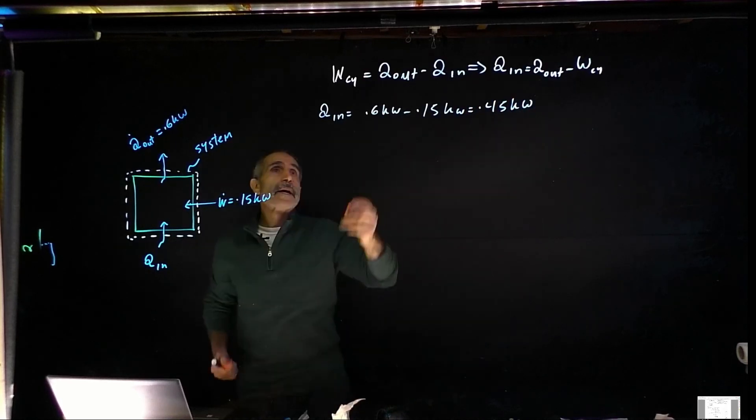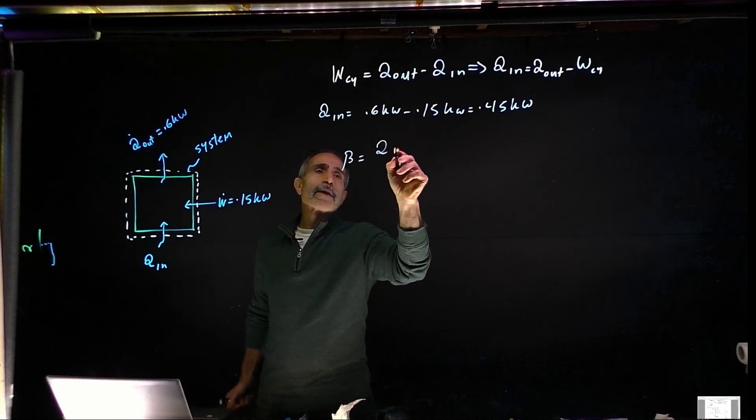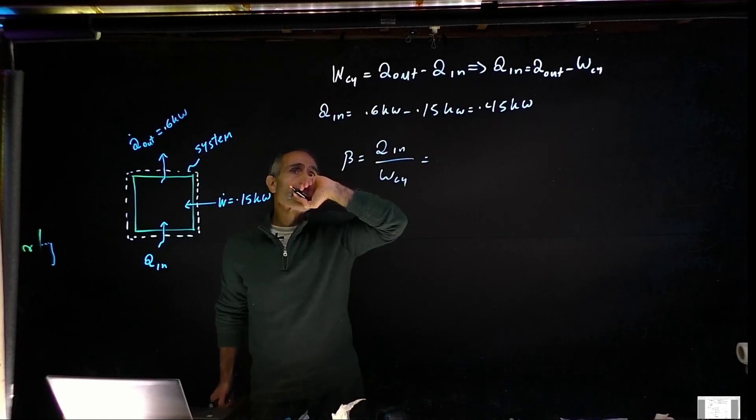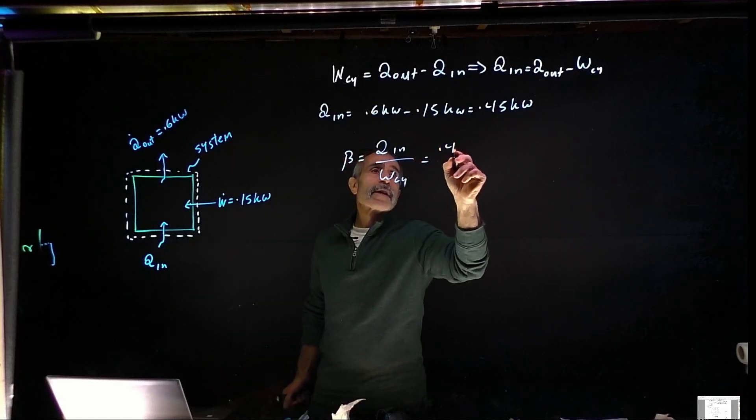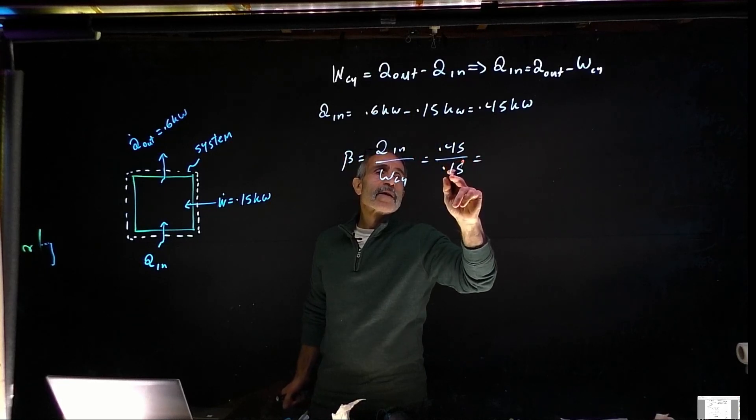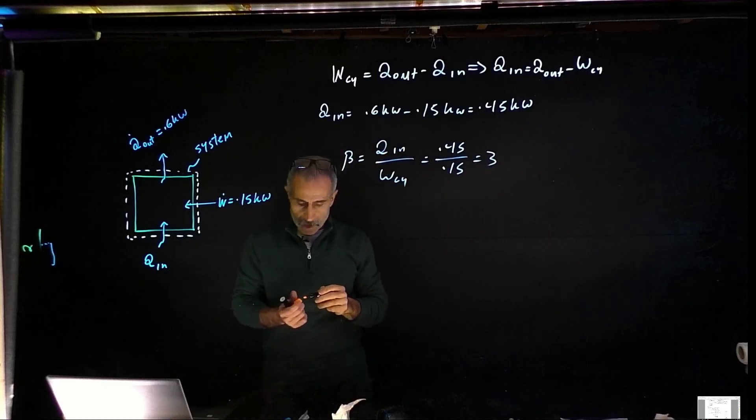Okay and really this is pretty simple so beta is equal Q in divided by W cycle. So Q in came out to 0.45 divided by 0.15 and that's 1, 2, 3, so it becomes 3. That's it.